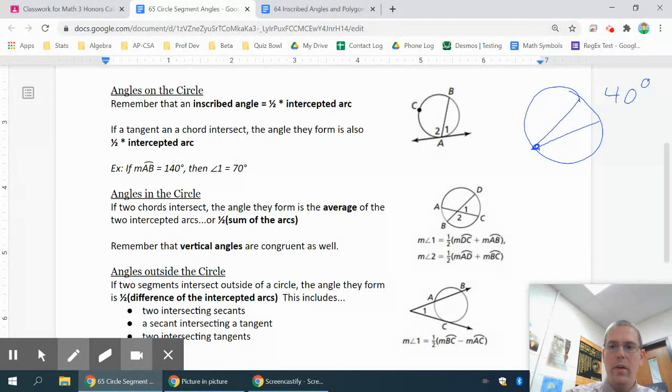A similar but not quite the same thing that happens is something like this: where if this arc here AB was 140 degrees, then this angle here, which is technically not an inscribed angle since it's formed by a tangent and a chord, but it's still 70 degrees. So it doesn't matter if the angle is actually inscribed or if it's one of these where the vertex is on the circle with the tangent line going outside the circle, it's still half of the arc.